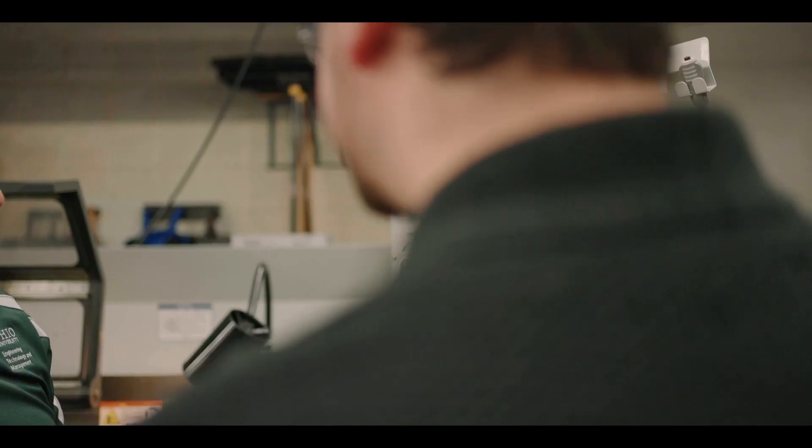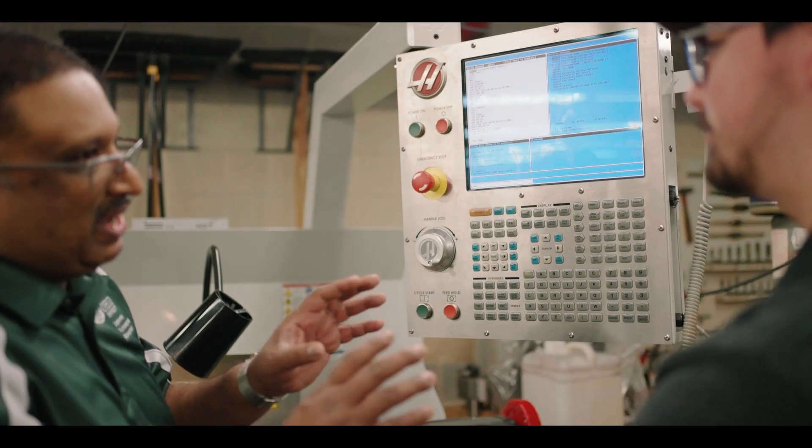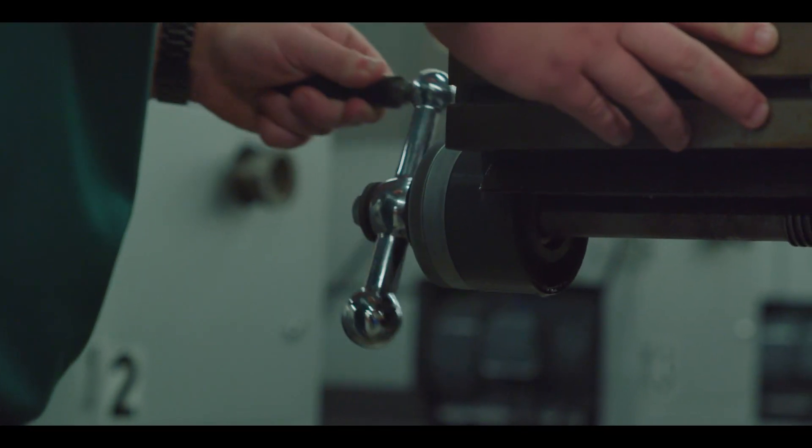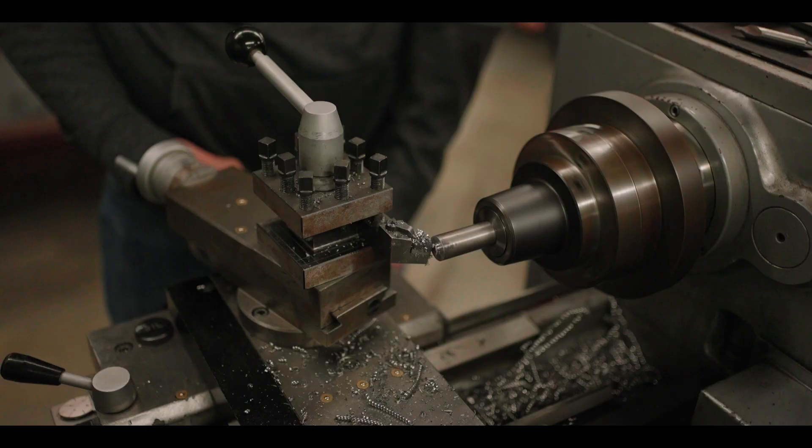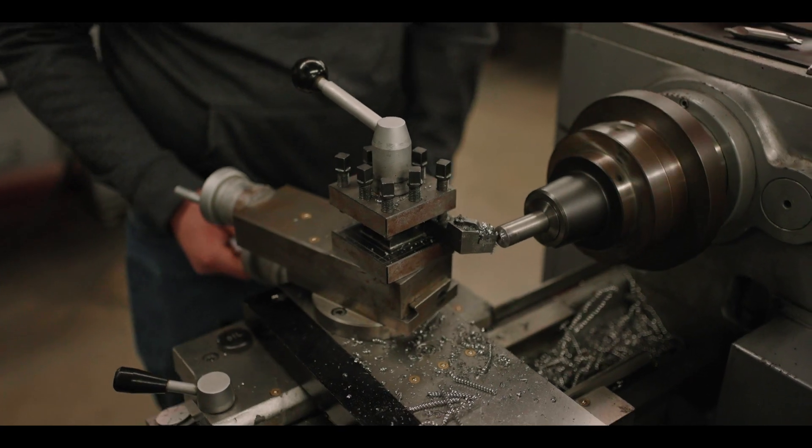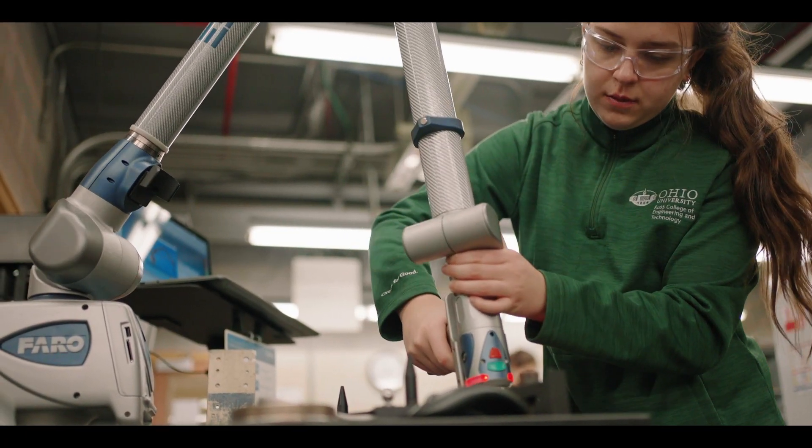In our machining and metrology lab, students have access to industrial-scale manual and CNC machines such as Haas Mills and Lathes, as well as precision measurement and inspection equipment such as a Faro coordinate measuring machine.